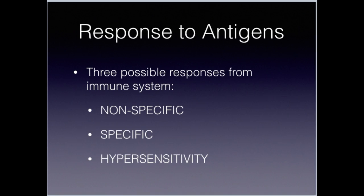There are three possible responses from our immune system. The first is non-specific — the first and second lines of defense. The second is a specific response to a specific antigen, which is our third line of defense. The third is hypersensitivity, which is an allergic reaction involving a response that is more exaggerated than it should be.